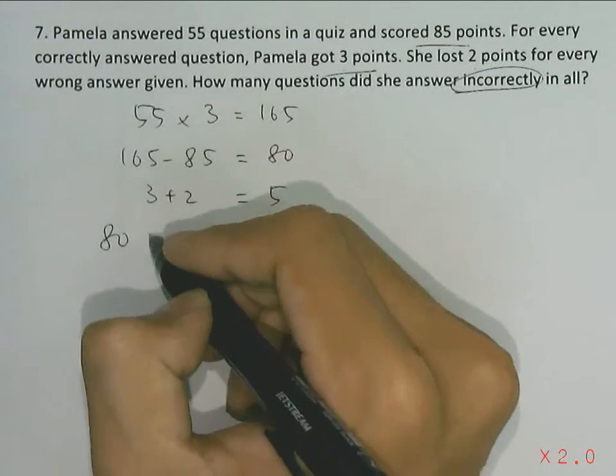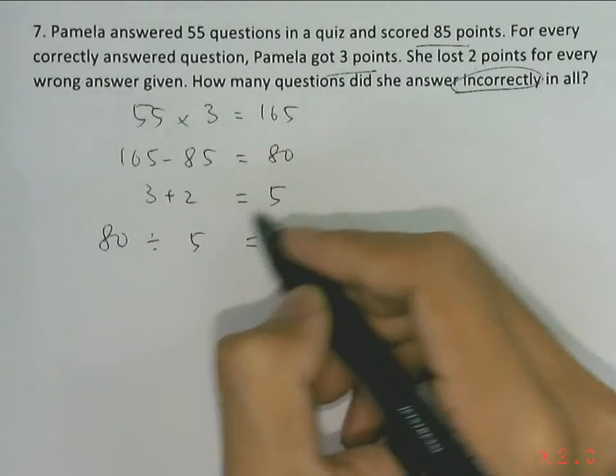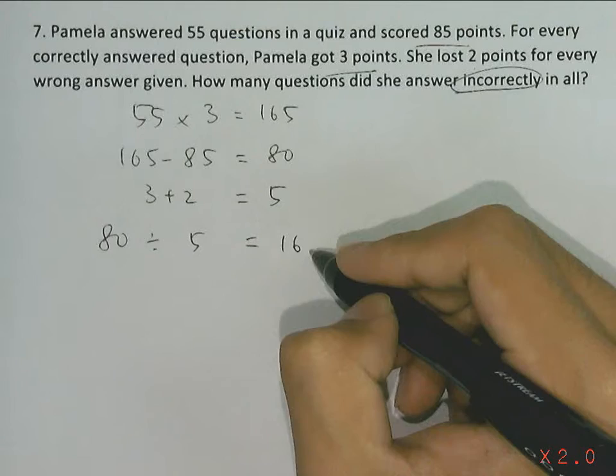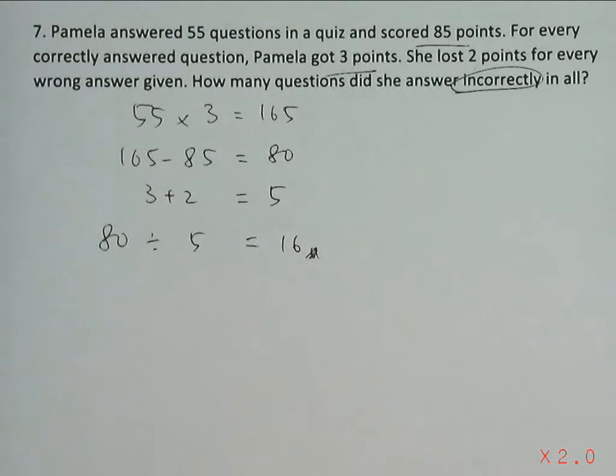So we can take the total difference of 80, dividing by the individual difference of 5, and we will have our answer of 16 questions answered incorrectly.